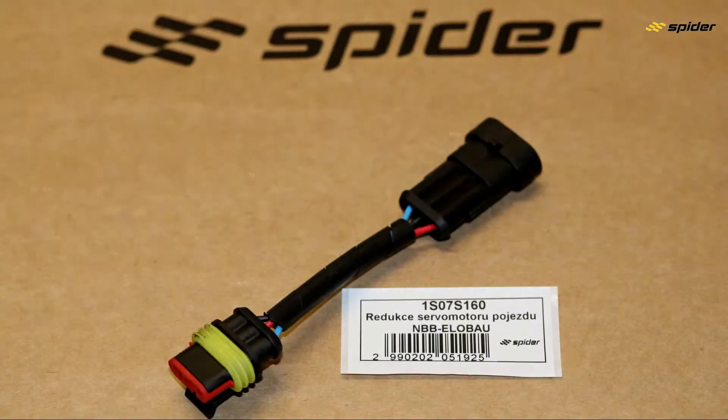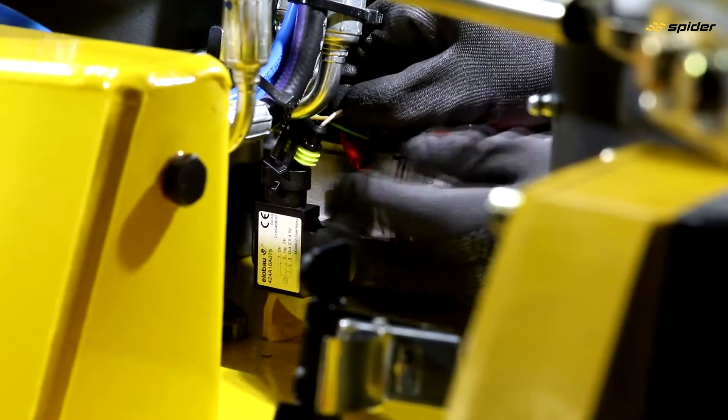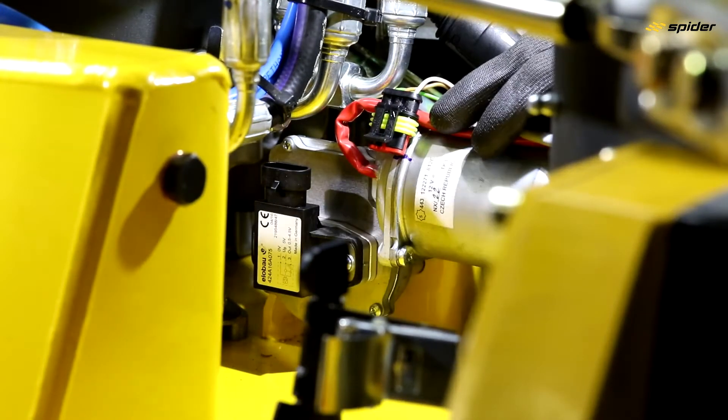When installing new servo motor steering into the old type of mower, use cable reduction, otherwise the servo motor deflects out of the neutral position.